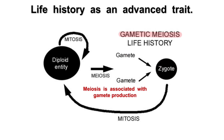What happens next? The zygote starts to divide through mitosis, so a fetus would be formed, and then an adult organism, which also grows through mitosis. When the organism is large enough and ready for sexual reproduction, through the process of meiosis, the organism produces gametes — two types: sperm and egg cells, or we can also say male and female gametes.